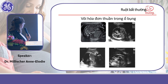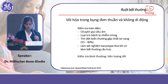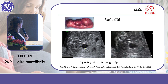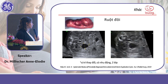Here is an example of hyperechoic bowel in severe IUGR. If you see calcified components within the bowel contents, suspect an association with intrauterine growth restriction. Regarding bowel duplication — when you encounter a duplication cyst, know that it is more frequent in the small bowel than the large bowel.